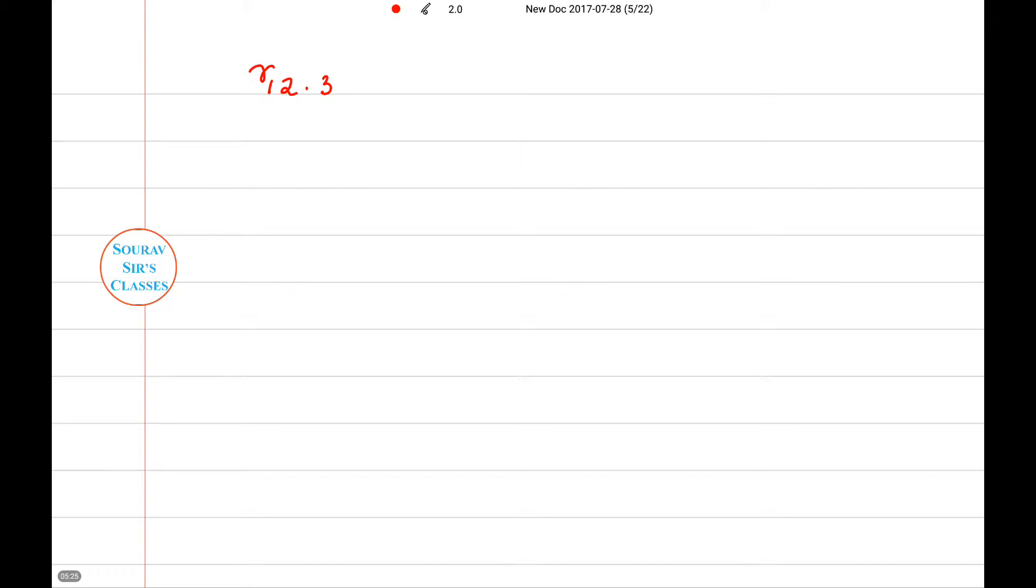So if we want to derive it, it will look something like this. This is equal to β̂₁₂.₃ into β̂₂₁.₃. This actually means the partial coefficient between X₁ and X₂ holding the value of X₃ constant.